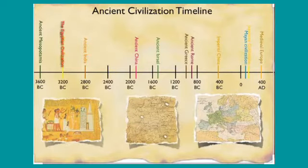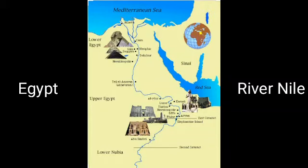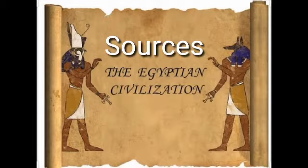Before we get into the lesson, let us see the timeline of the ancient Egyptian civilization. It arose around 3200 BCE near river Nile. A civilization arose in Egypt in the valley of river Nile. Egypt is in Africa. Annual floods in the river made the adjoining flood plains fertile and enabled farmers to grow crops. Without Nile, Egypt would have been a desert. That is why Egypt is also called the gift of the Nile.